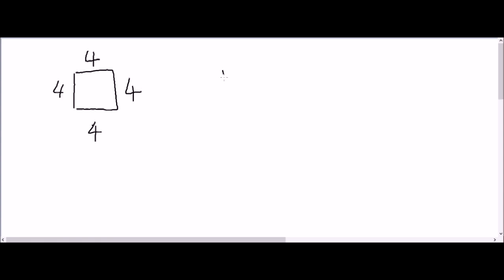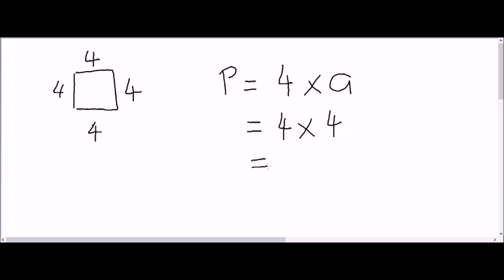The formula is: perimeter is equal to 4 multiplied by a, where a is one of the side lengths. So the formula equates to 4 multiplied by 4, and when multiplied the answer you get is 16 centimeters. Because one of the side lengths is 4 centimeters, when multiplied by its 4 sides you get 16 centimeters.